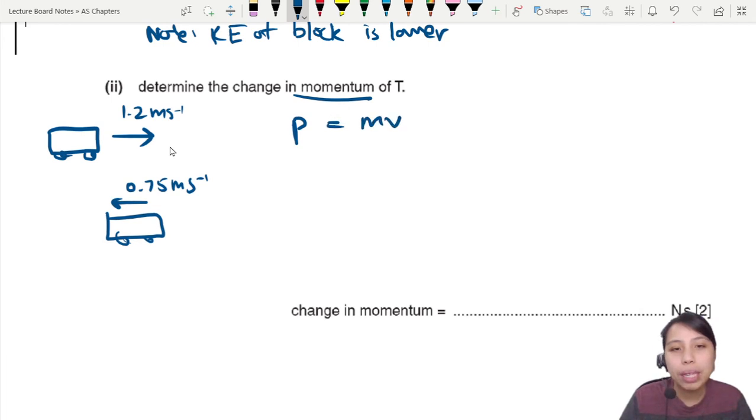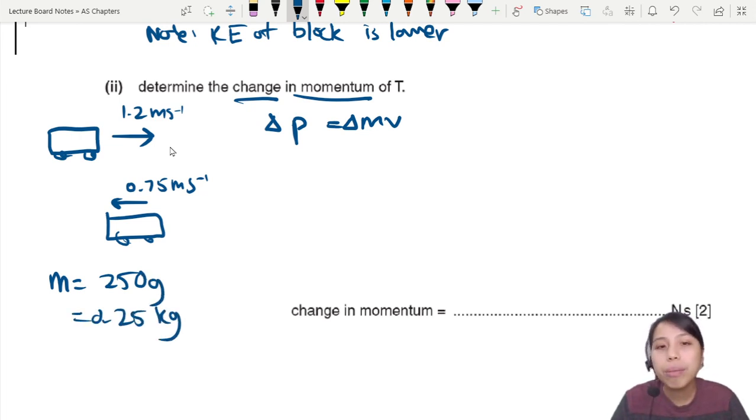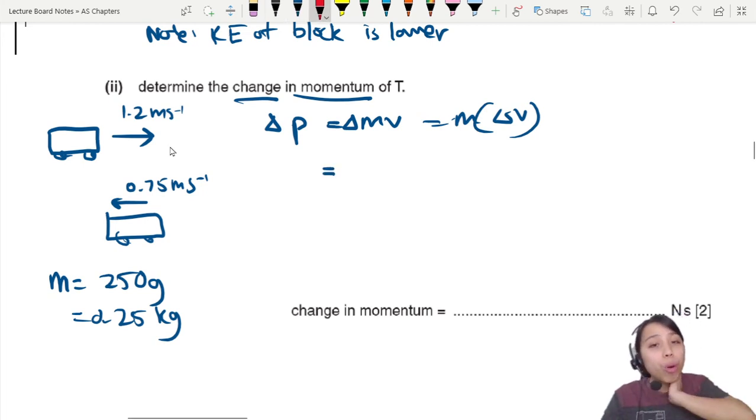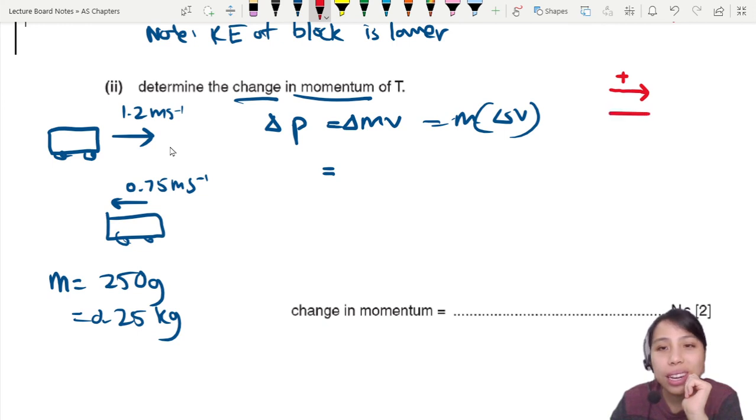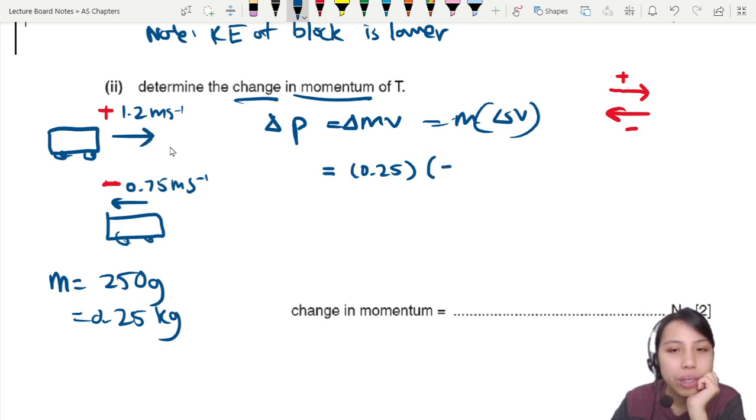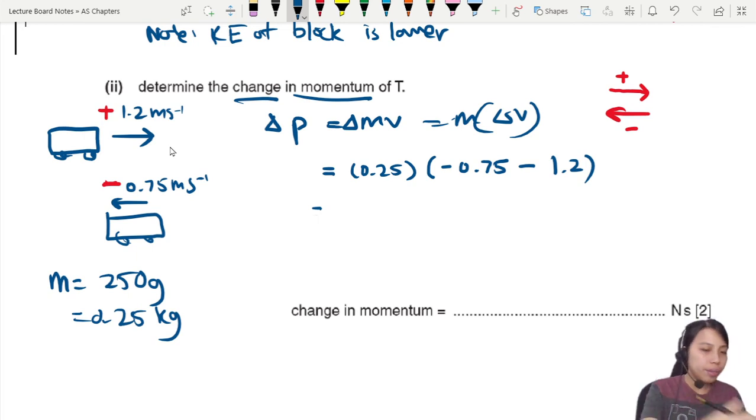When you see momentum, stay calm. We find p = mv, but they're looking for change in momentum, so delta p = m × delta v. The mass trolley is 250 grams, that's 0.25 kg. No change in mass means the thing that changes is the velocity. We take final minus initial. Momentum is a vector - direction matters. I'll choose anything moving right as positive, left as negative. So we multiply: 0.25 × (−0.75 − 1.2).